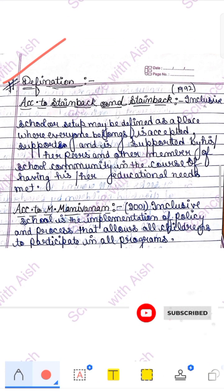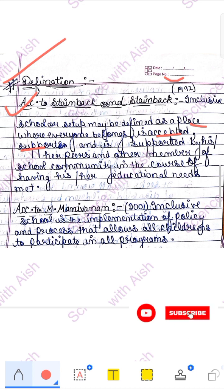Now let's come to definitions given by some writers, which you need to write in your exam papers. According to Stanback and Stanback (1992), inclusive education is defined as a place where everyone is accepted and supported — by the school community, principals, teachers, and peers who study together — and where educational needs are also fulfilled. An inclusive school is a place where every child belongs, every child is accepted, and every child is supported.